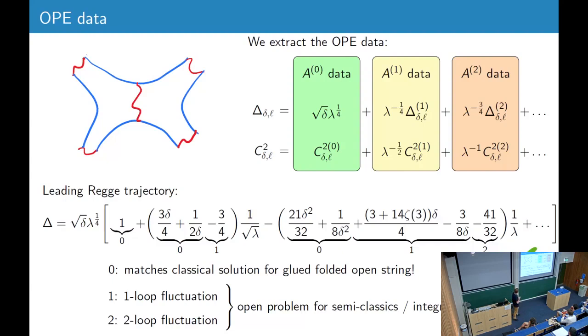So there are also other terms that have less powers of delta, and these correspond to the one- and two-loop fluctuations to the classical solution. So for these terms one and two, there's no independent computation, so this is an open problem for semi-classical computations or integrability to compute these numbers and see if it agrees with our result.